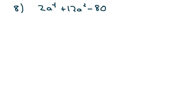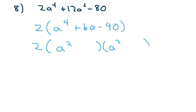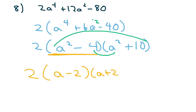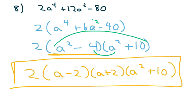The last one: I can factor out a 2 here, giving a to the 4th plus 6a squared minus 40. I keep my 2 and it's going to be a squared times a squared — one's positive, one's negative. I think 4 and 10 will work: the 10 is positive and the 4 is negative. Checking: 10 minus 4 is 6 — that's what we need. And I can also factor this more — this is the difference of squares. So we have 2 times a minus 2 times a plus 2 times a squared plus 10. And that's all of this set. You just have to keep factoring and factoring.